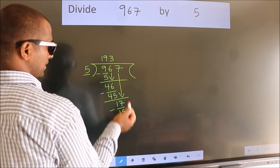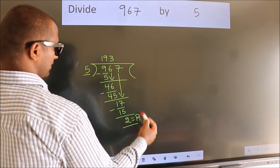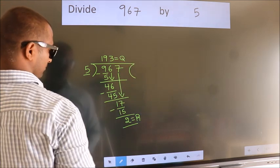No more numbers to bring it down. So, we stop here. This is our remainder. This is our quotient.